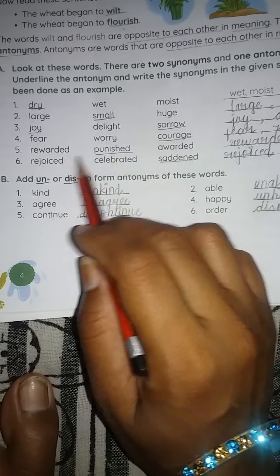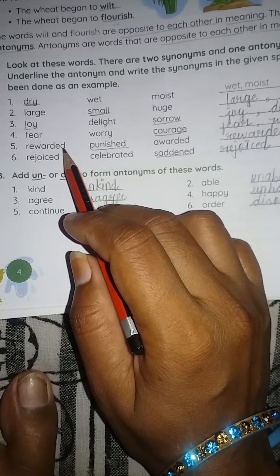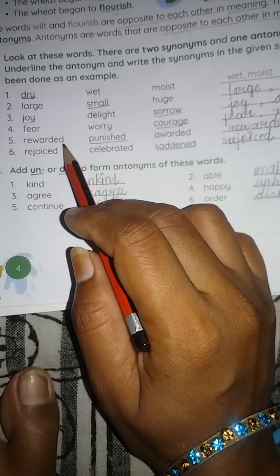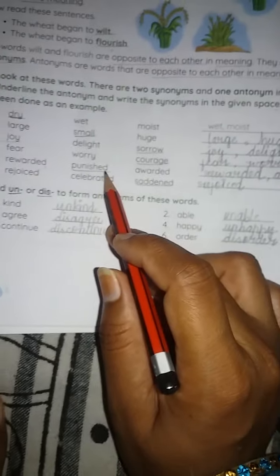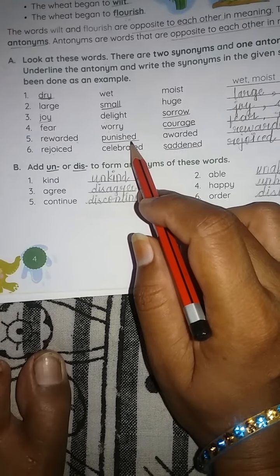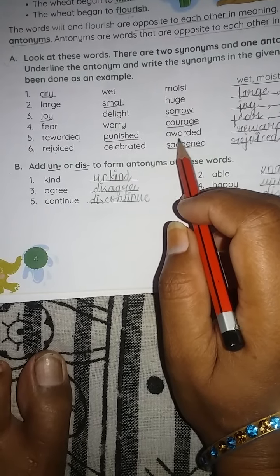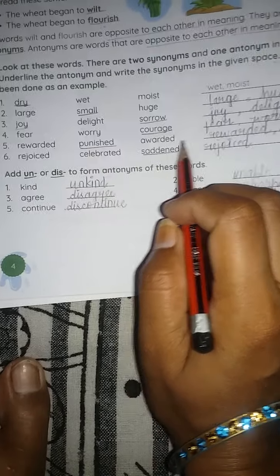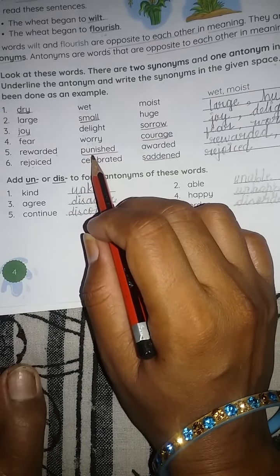Next we have rewarded, punished, awarded. Rewarded kya hota hai? Aap reward dena kisi ko, khush ho karke. Kisi ne kuch kam kiya, aap ke liye, aap bahut khush ho usse. To aap usko reward dena chahate ho, apni marzi se. Punished yani, kisi ko punish karna, saza dena. Aapko lagta hai ki isne ye thik nahi kiya, isko to saza milni chahiye. Awarded matlab aapne koi bahut hi achcha kam kiya hai, competition jeeta hai, to aapko award diya jata hai. So see, rewarded and awarded, both have the same meaning. So these two are synonyms and they will be written over here. Rewarded and awarded. And as punished is the opposite of these two, so this would be underlined.